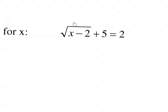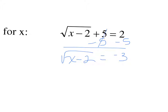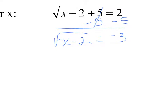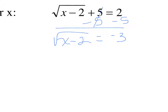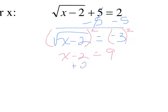For the next equation, we isolate the radical by subtracting 5 from both sides, giving the square root of x minus 2 equals negative 3. Now we can get rid of the radical by squaring both sides. We get x minus 2 equals 9, since negative 3 times negative 3 makes positive 9. Adding 2 to both sides gives x equals 11.